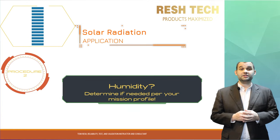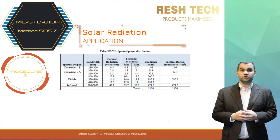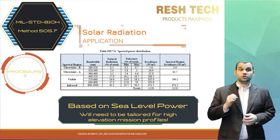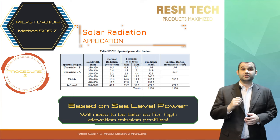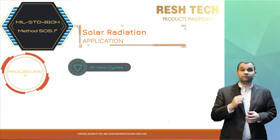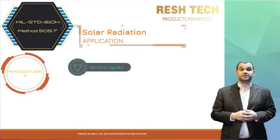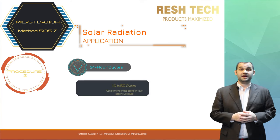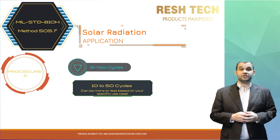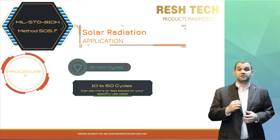Pictured is Table 505.7-1, which provides the spectral power distribution to look for when selecting spectral lamps for solar radiation simulation. This simulates sea-level solar radiation exposure, so if you are simulating a higher elevation, determine the spectral distribution for your test case based on your mission profile. The recommended cycle for Procedure 2 is 24 hours, with 20 hours of constant solar radiation followed by 4 hours of darkness to simulate cool-down and contraction of the system after the sun sets. Cycles could range from 10 to 50 or more based on your mission profile and acceleration factor. The operational test in MIL-STD-810H suggests performing an operational test during the last four hours of the 20-hour heat cycle — tailor this to your mission profile.